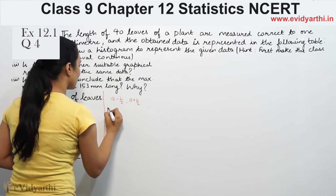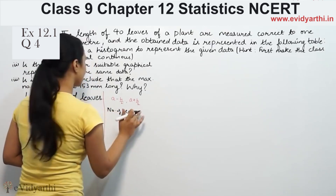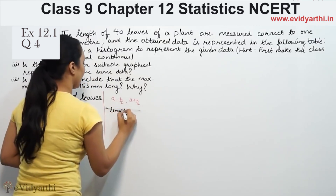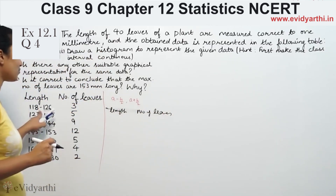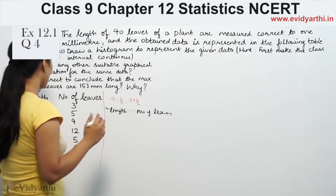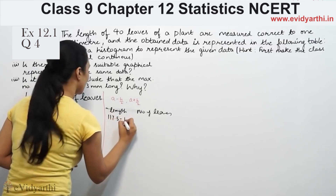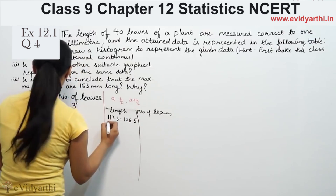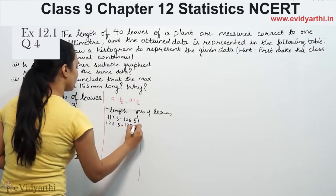So we set up our table with two columns: length and number of leaves. The lower limit is found by subtracting 0.5. So the first class interval starts at 117.5 and goes to 126.5.